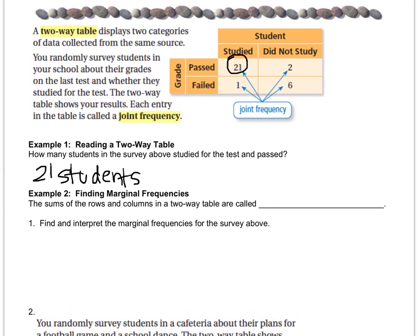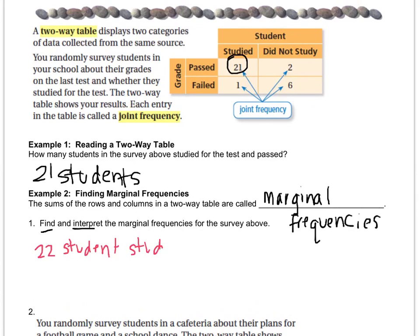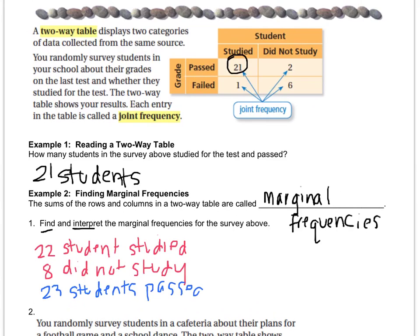The sums of the rows and columns in a two-way table are called marginal frequencies. We have to find and interpret the marginal frequencies, and there are going to be four answers. The first one is that 22 students studied, and eight did not study. Additionally, we know that 23 students passed, and that seven did not pass. Those are the marginal frequencies — you're taking each row or column and adding them.